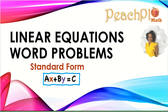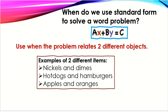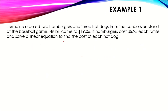In this lesson we're looking at solving linear equations word problems using standard form ax plus by equals c. We use standard form when we're relating two different objects — for example, nickels and dimes, hot dogs and hamburgers, apples and oranges, baseballs and basketballs. As long as you're trying to relate two different objects, that is when we use standard form.